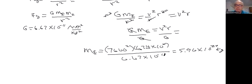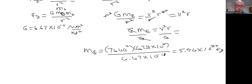You can also use the same approach to get the mass of the sun. In that case, the mass of the sun is what you're solving for, and the satellite going around the sun is the Earth, so mass two would be the mass of the Earth. Other than that, the problem is essentially the same — just with different numbers. It's a very powerful equation.